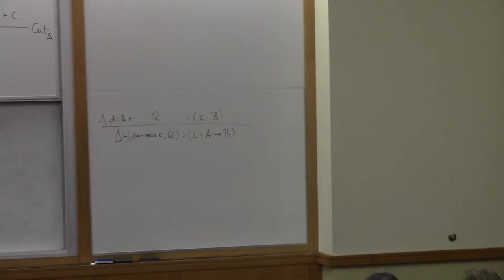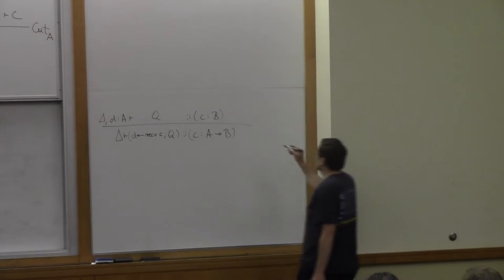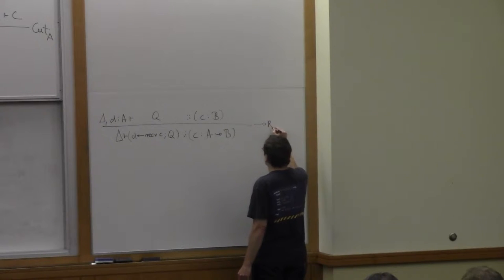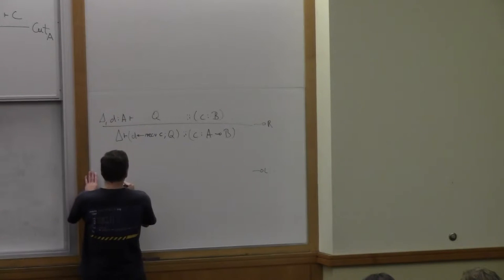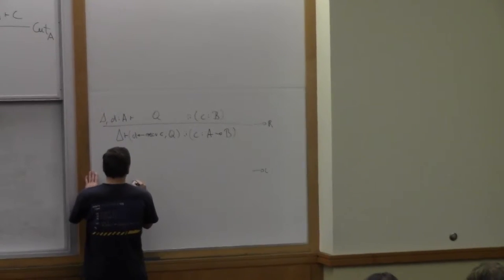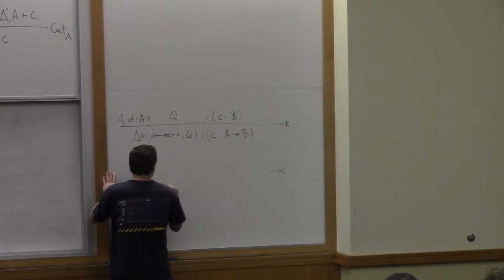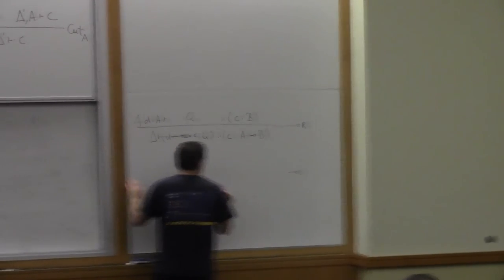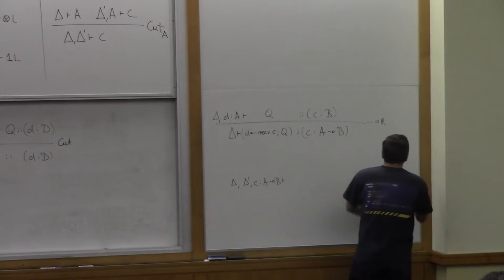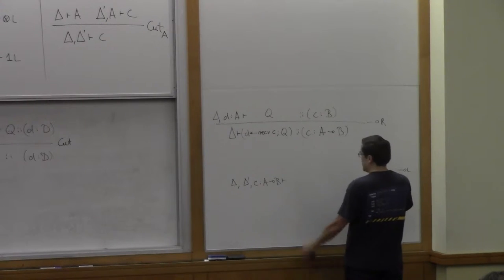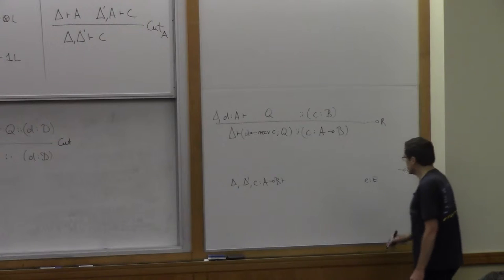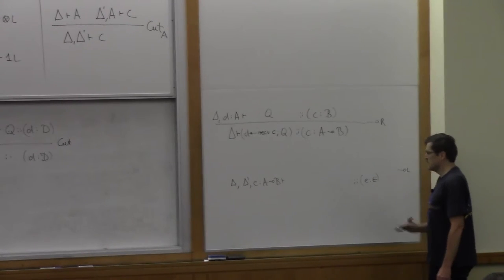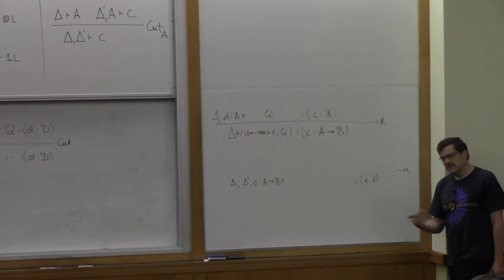So we only did one half of implication. This is the right rule which is an input. Now what does the left rule have to be? So let's think about that. So on the left rule we have a context delta, delta prime and it has in it C, A ⊸ B. And it itself is going to be something like that. It offers some service to the outside.